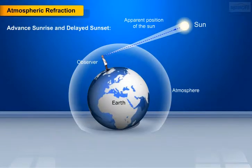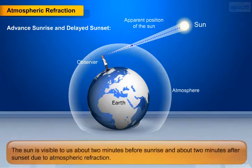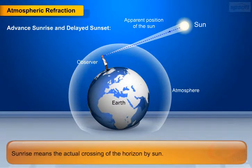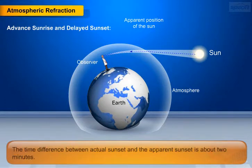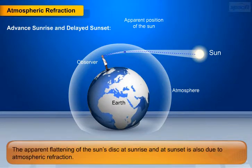Now let's study about advanced sunrise and the late sunset. The sun is visible to us about 2 minutes before sunrise and about 2 minutes after sunset, due to atmospheric refraction. Sunrise means the actual crossing of the horizon by the sun. The time difference between actual sunset and the apparent sunset is about 2 minutes. The apparent flattening of the sun's disk at sunrise and at sunset is also due to atmospheric refraction.